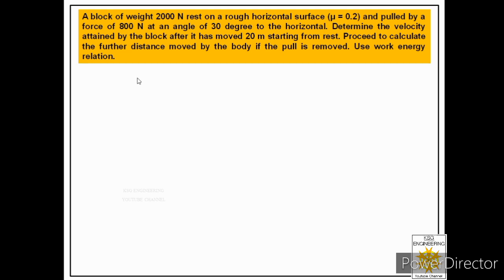We also need to calculate the further distance moved by the body if the pull is removed, using the work-energy principle. Let us understand this through a diagram. We are given a block with weight 2000 Newton resting on a rough horizontal surface, on which a pull of 800 Newton is applied at 30 degrees to the horizontal. We are asked to find the velocity attained after the block has moved 20 meters starting from rest.